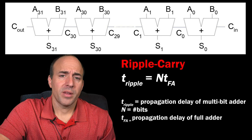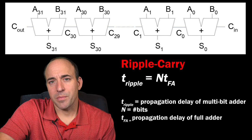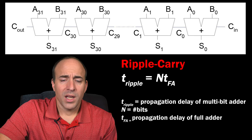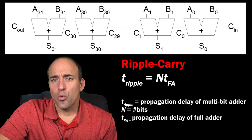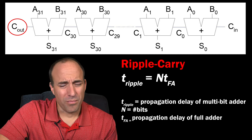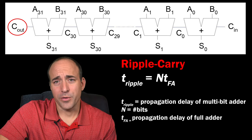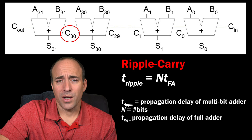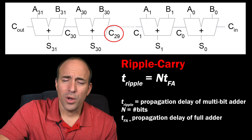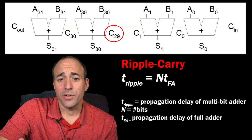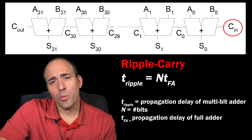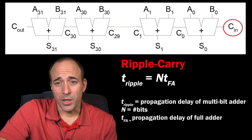The problem with the ripple carry adder is that its propagation delay is n times the propagation delay of the full adder, where n is the width of the operands being added. This is because the most significant full adder takes its carry-in from the full adder to its right, and that one takes its from the next, requiring a signal to propagate through all full adders — from the carry-in into column 0 all the way to the carry-out of bit n minus 1.